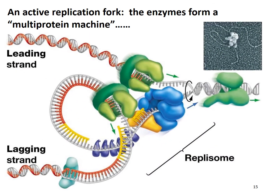Here is the loop structure mentioned earlier. With this structure, it allows both the lagging strand and the leading strand to be copied in the same direction. And in this electron micrograph you can definitely see the structure of the holoenzyme and the loop structure.